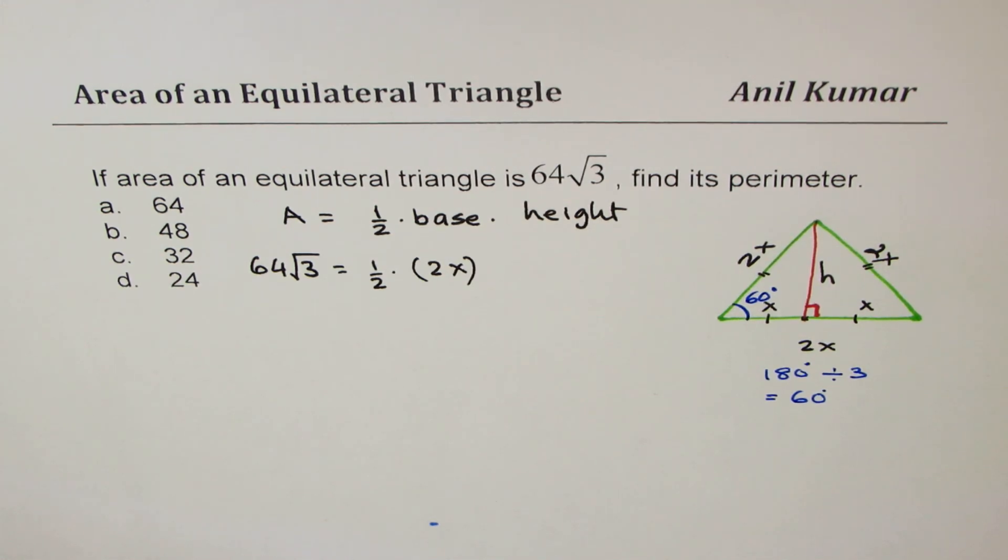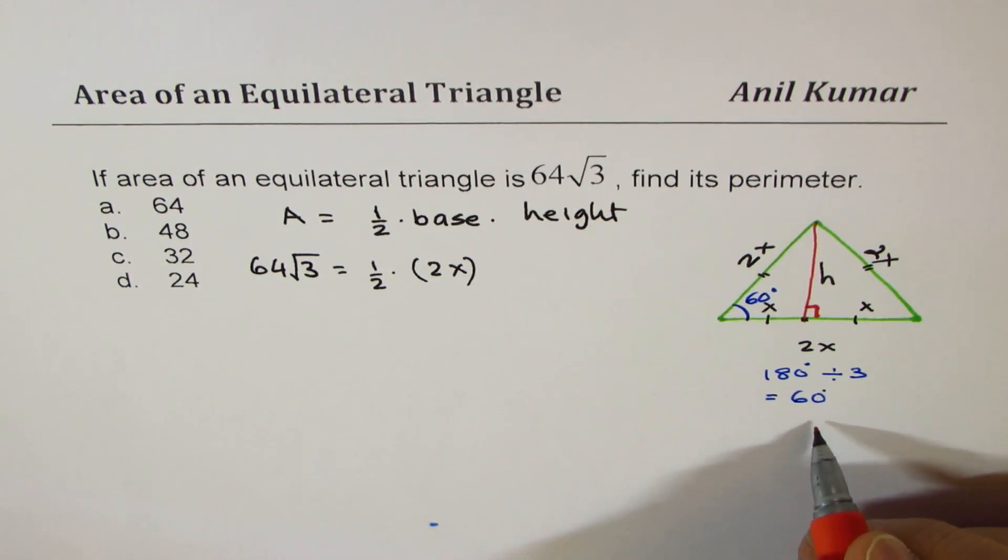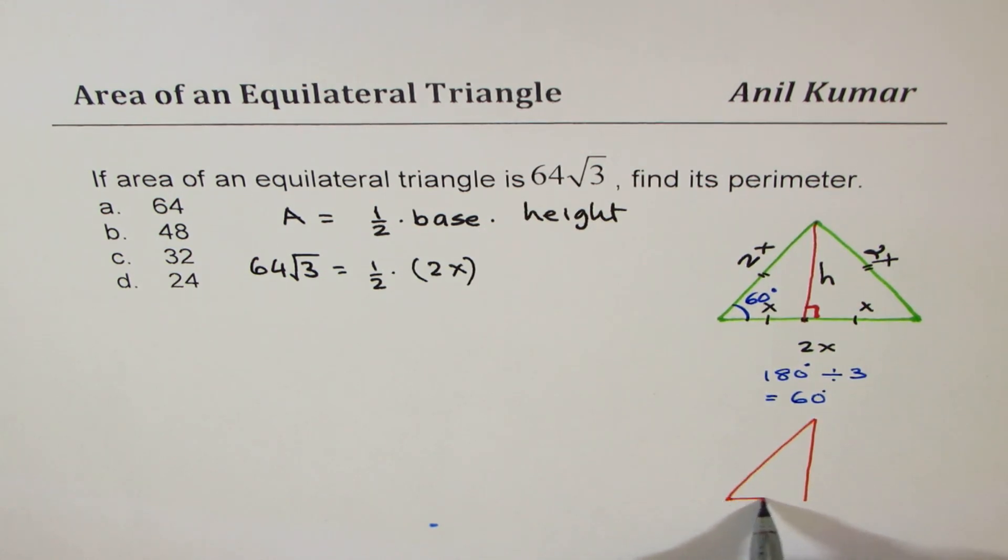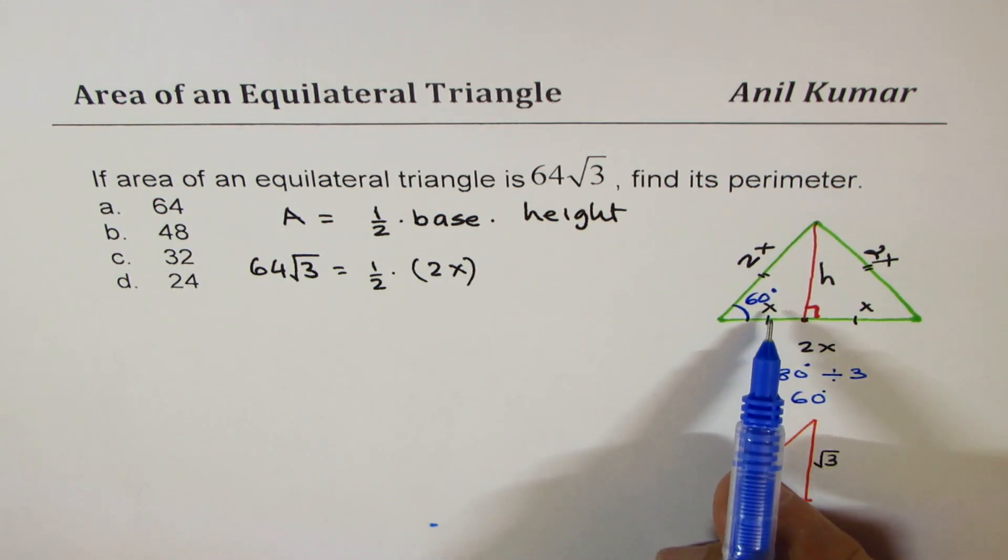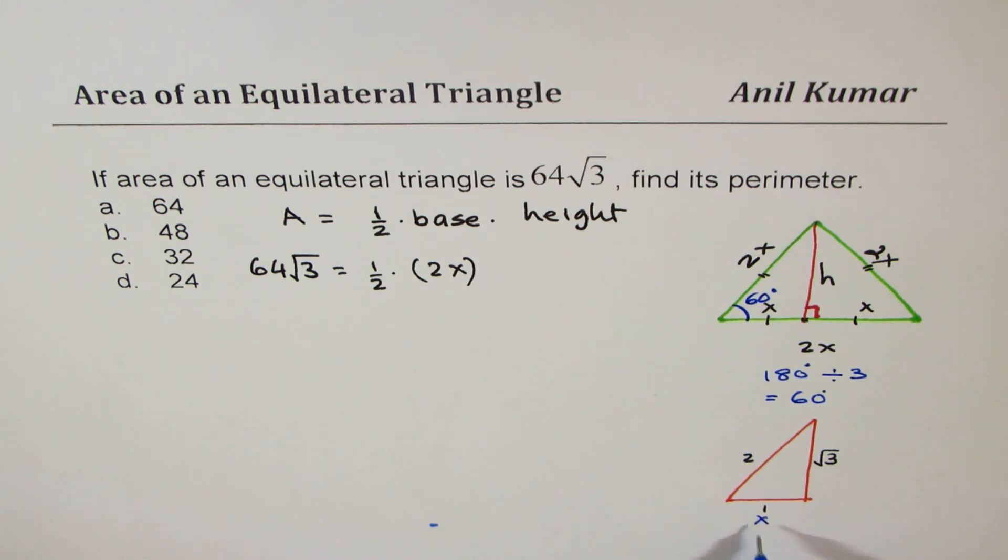Now some people can use properties of special triangle, which is 60, 30, 90. So if I have a 60, 30, 90 triangle, in that case, the sides are in the ratio of 1, 2 and square root 3. So that is the ratio. So if I have x, 2x, that means this should be square root 3x. You could do that.